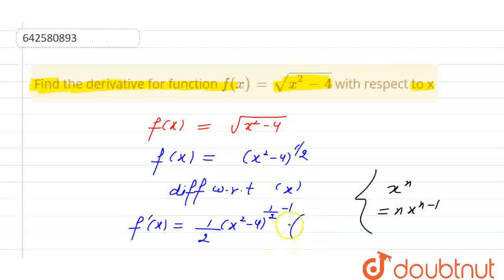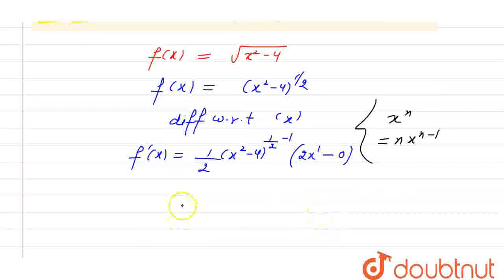So now, differentiation of inside function. Inside variable and constant, x square will be 2x raised to the power 1. Power shifts to coefficient and it decreases by 1, and differentiation of 4 will be 0 because 4 is a constant.